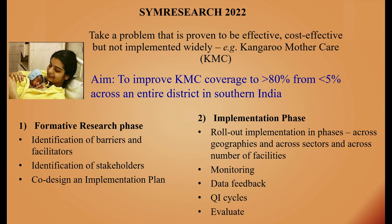The research has two phases. The first is the formative research phase, where we learn the ground realities of why this is not happening — identifying barriers and facilitators, identifying stakeholders, and co-designing an implementation plan with families as well as healthcare providers. In the second year, we implemented in phases — starting with a small set of health facilities, beginning with the public sector before moving to the private sector. We also had teams for monitoring, data use, quality improvement cycles, and evaluation.